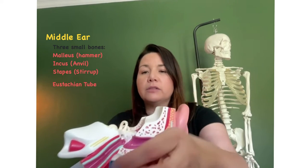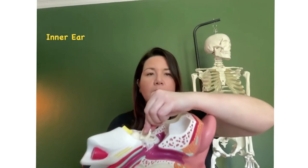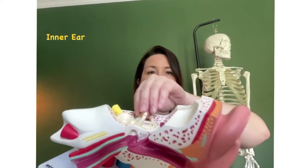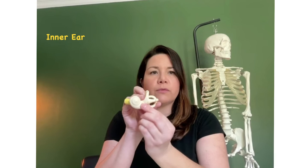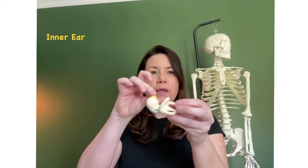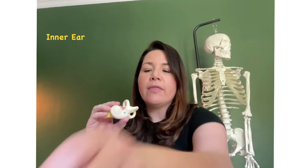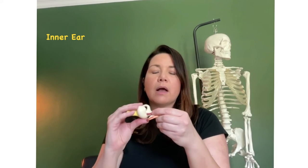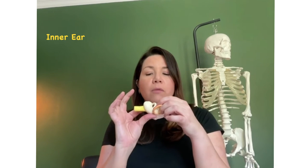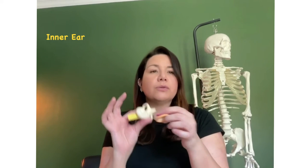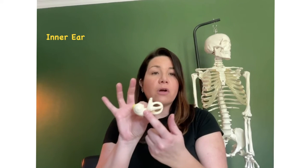The middle ear connects to the inner ear. Here's the inner ear right here. If you look at the inner ear, there's this portion between two very distinct areas of the inner ear where the bones of the middle ear are going to connect to the inner ear. That portion right there is called the vestibule.